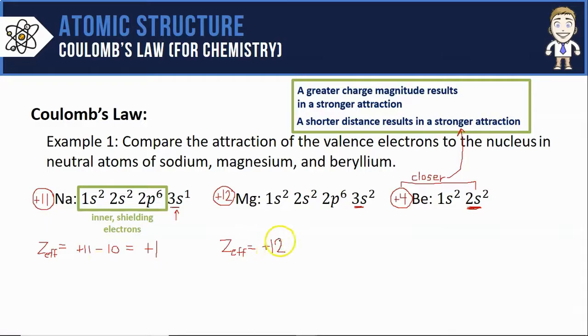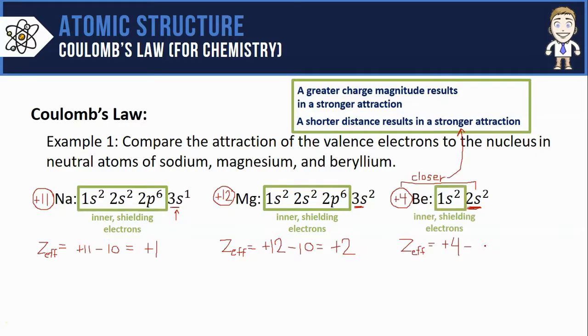The magnesium atom has a plus 12 nuclear charge with the same 10 shielding electrons. Subtracting them out gives me an effective nuclear charge of plus 2 in magnesium. And in beryllium we've got a plus 4 nucleus with only two shielding electrons. Subtracting those out gives me an effective nuclear charge of plus 2.